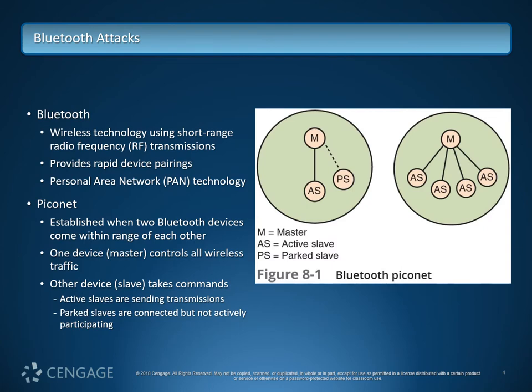To understand Bluetooth attacks, first we have to understand what Bluetooth is. It's a short-range, radio frequency-based wireless technology that runs from about 2.4 to 2.485 gigahertz. It provides rapid device pairing so we can hook devices up quickly and transition between devices, and there are also multi-point connections that have been established. It generates what's called a personal area network, or PAN.